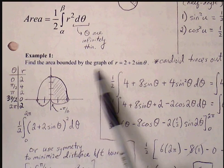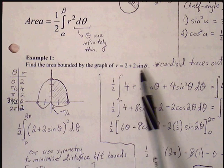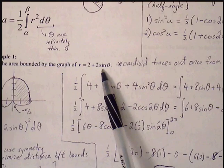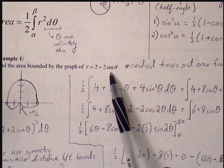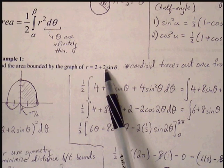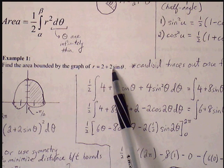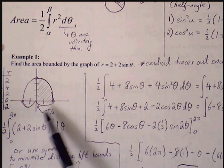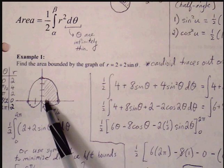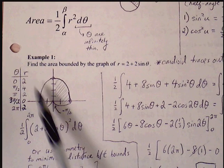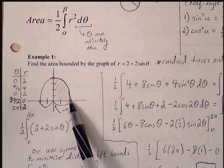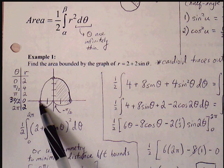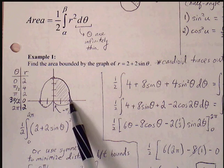Example 1: find the area bounded by the graph of r = 2 + 2sinθ. This is a cardioid that traces out once from 0 to 2π. The outer diameter is 2 + 2 = 4, and 2 − 2 = 0, so the graph bounces off the pole. Graphing the ordered pairs: at 0 we get 2, at π/2 we get 4, at 3π/2 we get 0, and at 2π we return to 2.